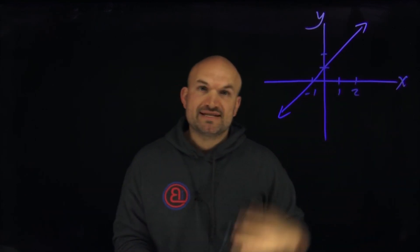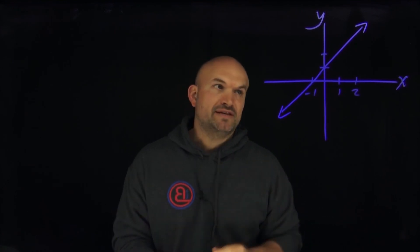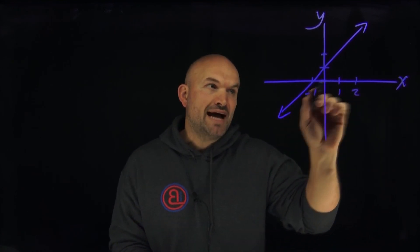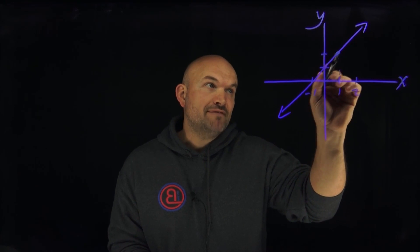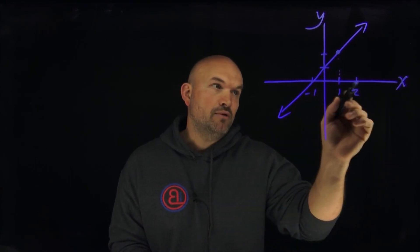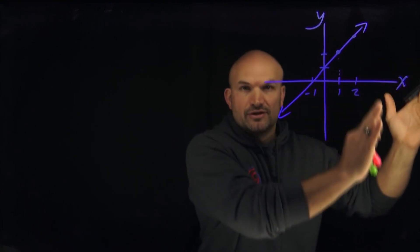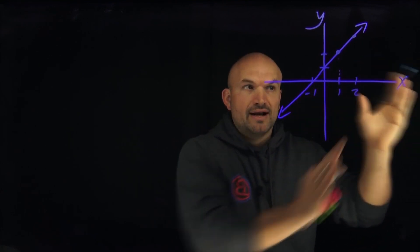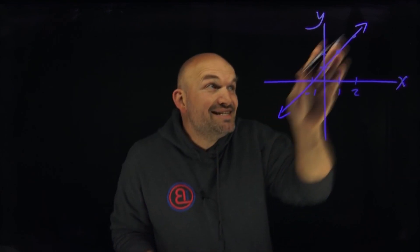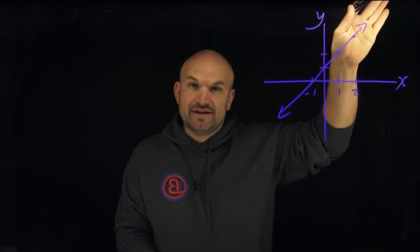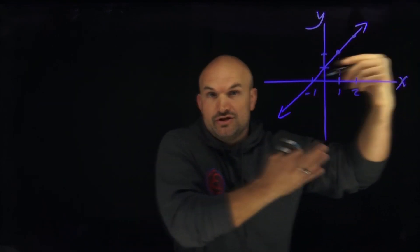The domain represents all the x values that make up this function. Another way to think about it: for every value of x, like one and two, is there a point on this graph that is defined? If I keep on going farther and farther to the right, I'm always going to have a point that's defined on this graph, because this graph is continuing indefinitely to the right. It's also continuing indefinitely to the left.